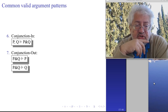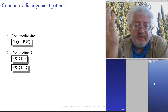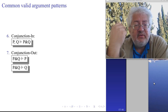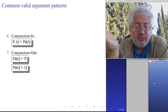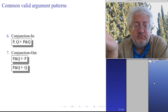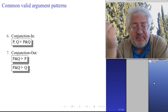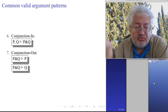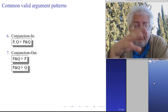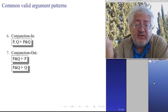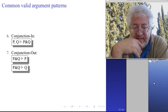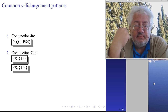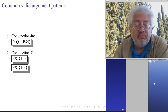Conjunction introduction: if I know that p is true and q is true separately, then p and q must also be true. Conjunction elimination works in reverse: if I know that p and q is true, then I know p is true and separately I know q is true - because otherwise p and q could not be true.